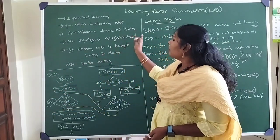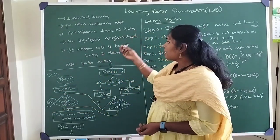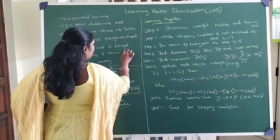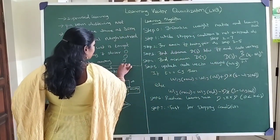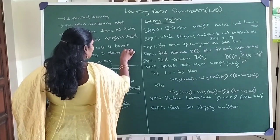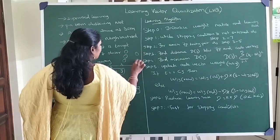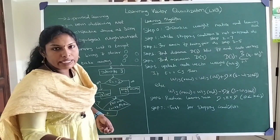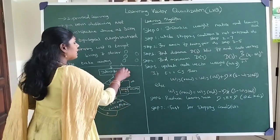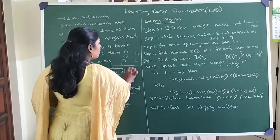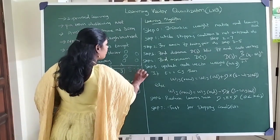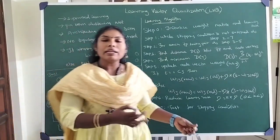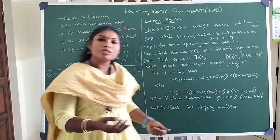The architecture is the same as that of your self-organizing map. You will have some set of input neurons — all X — and you will have the cluster unit as the final one. It is supervised learning, meaning for each and every input pattern it is associated with a target value. We know for this input pattern which cluster it belongs to.